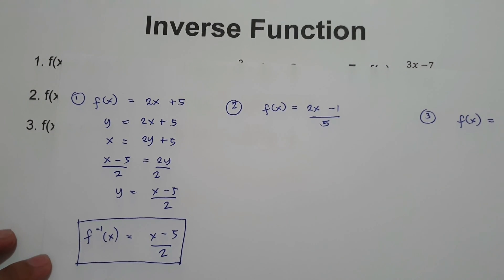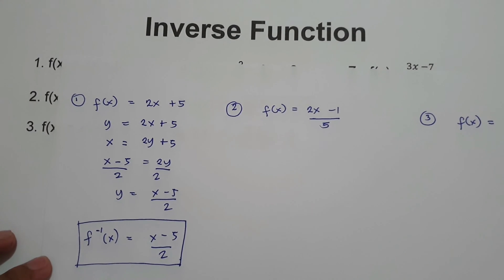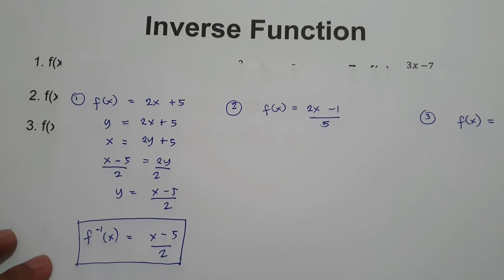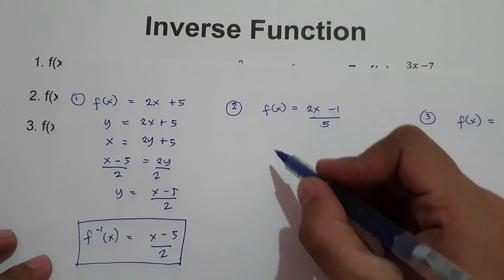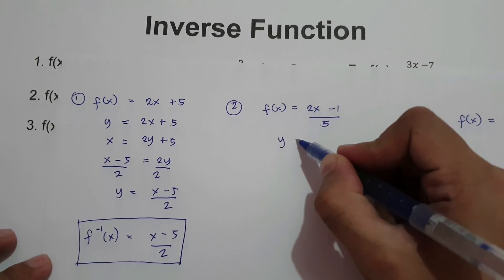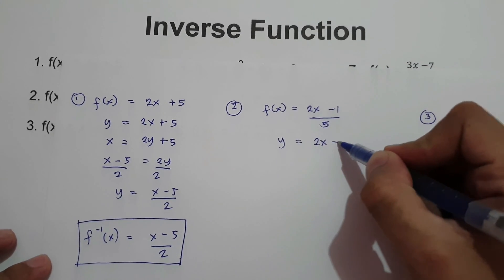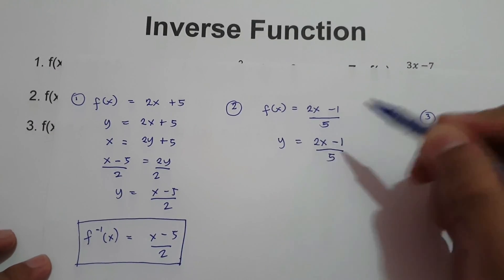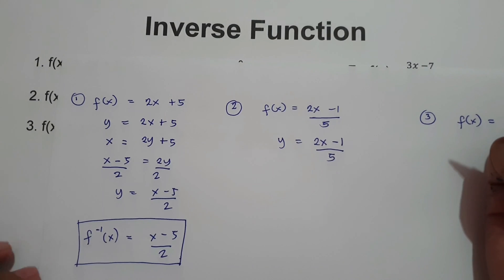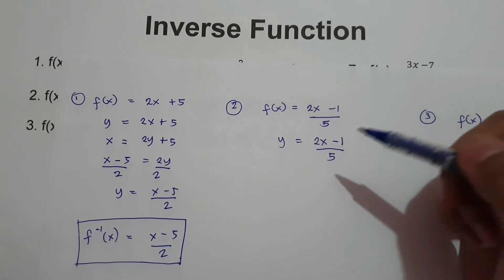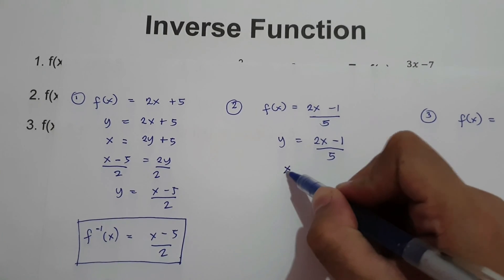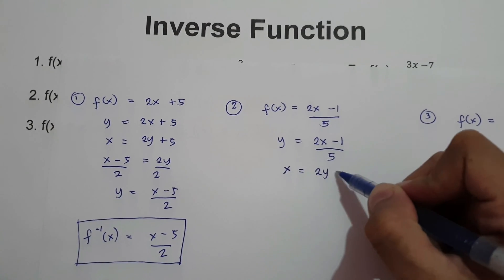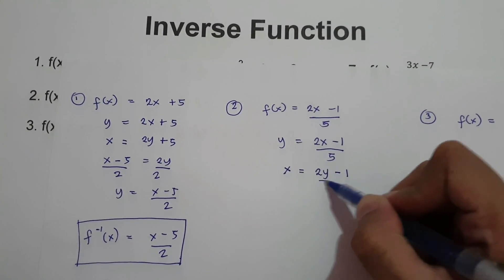What about number 2? f of x equals 2x minus 1, all over 5. First step, we're going to change f of x into y. We have y equals 2x minus 1 over 5. Next, we are going to switch x and y variable. We have x equals 2y minus 1 over 5.